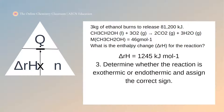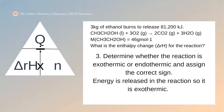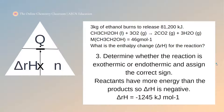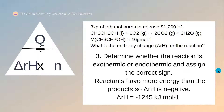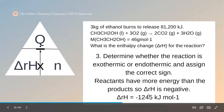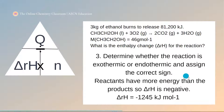Our final step with enthalpy change is to work out whether the reaction is exothermic or endothermic, and so whether we need a positive or negative sign in front of our enthalpy change. In this reaction, we are told that energy is released, and therefore it's an exothermic reaction. The enthalpy of reaction is going to be negative. As there is only one mole in the balanced equation, no further adjustment is needed, so our answer is negative 1,245 kilojoules per mole.